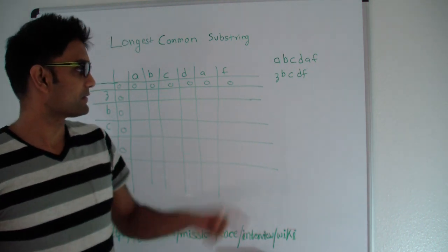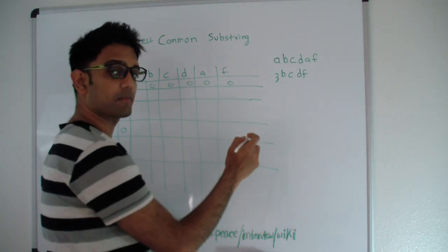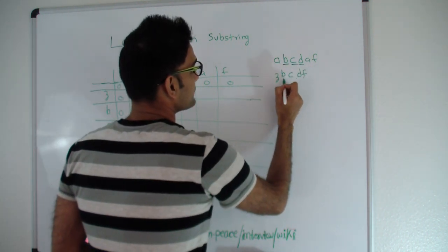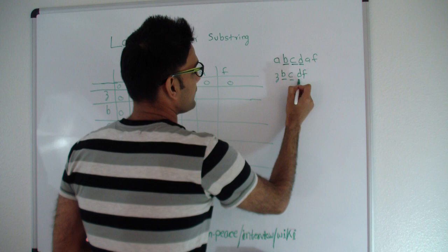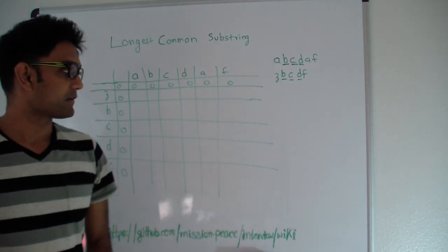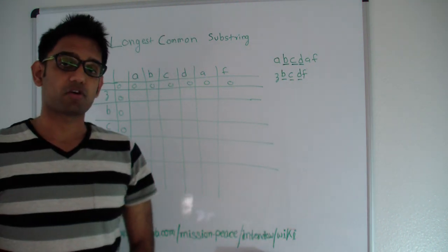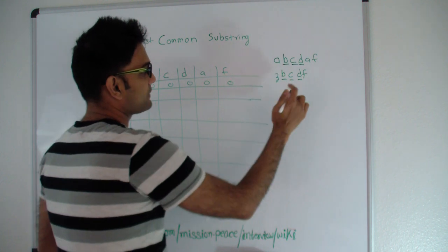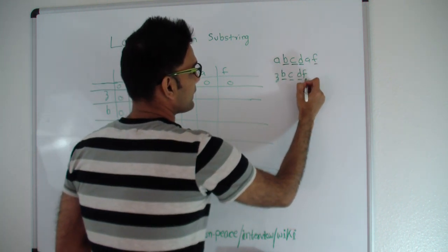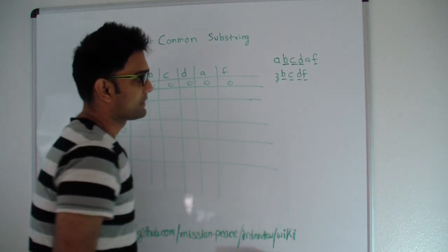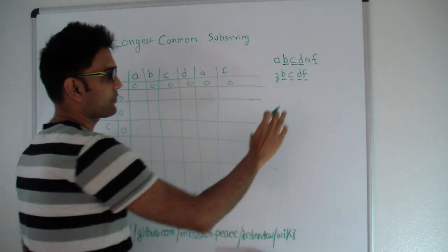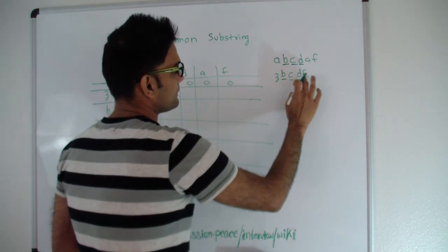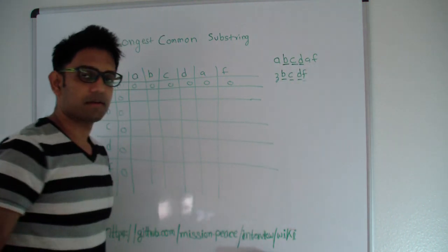For these two particular strings, the longest common substring will be B, C and D. Note how it is different from longest common subsequence. The longest common subsequence for these two is B, C, D, F and F. But since we are talking about longest common substring, the longest common substring here is B, C, D and the length is 3.